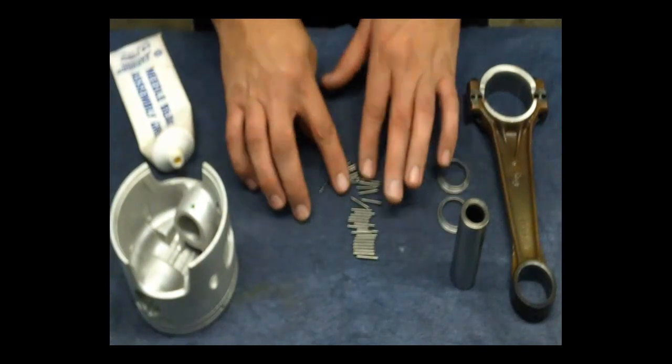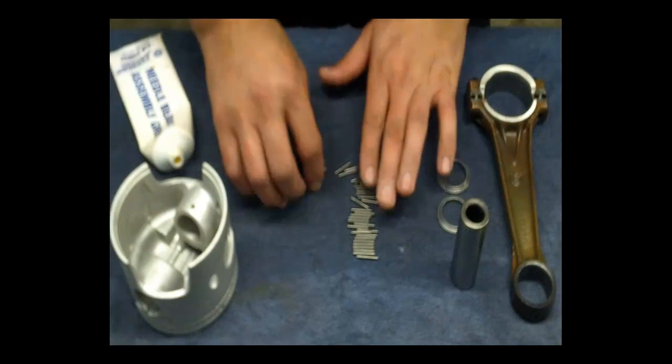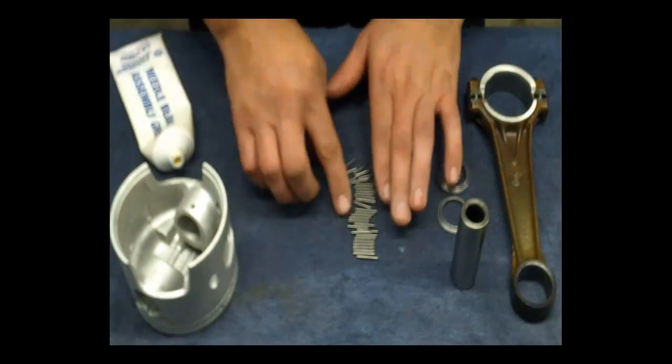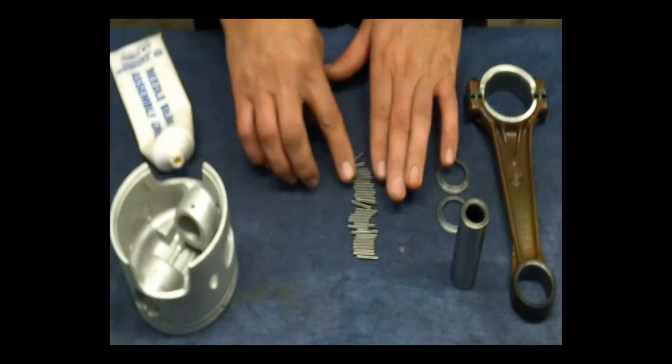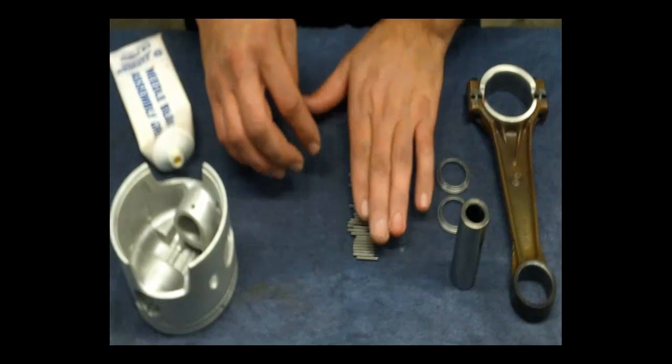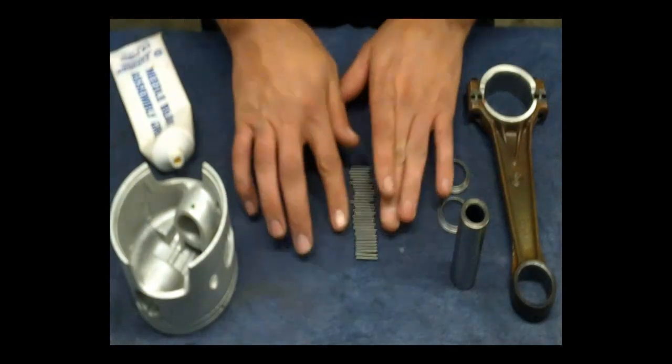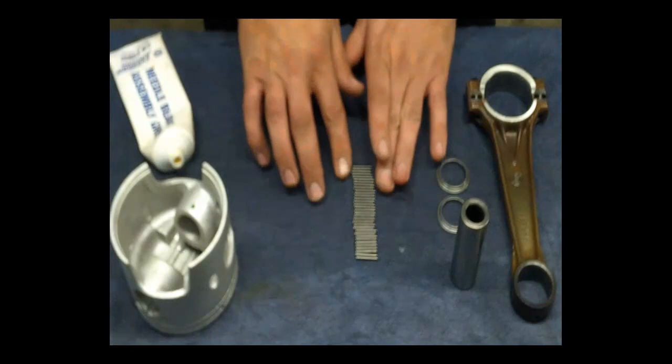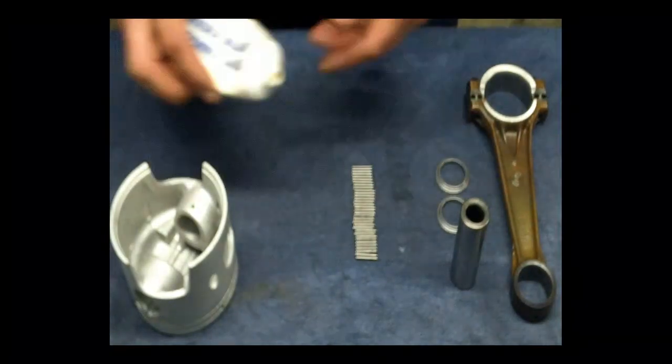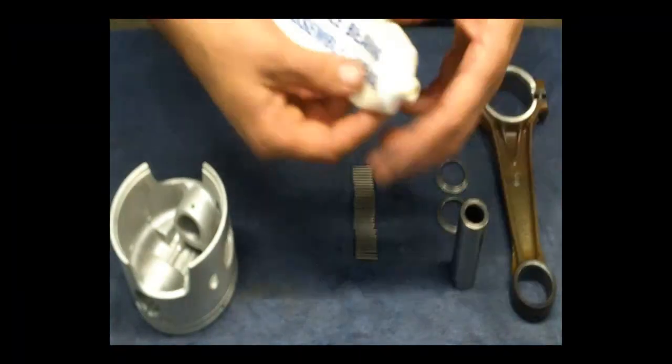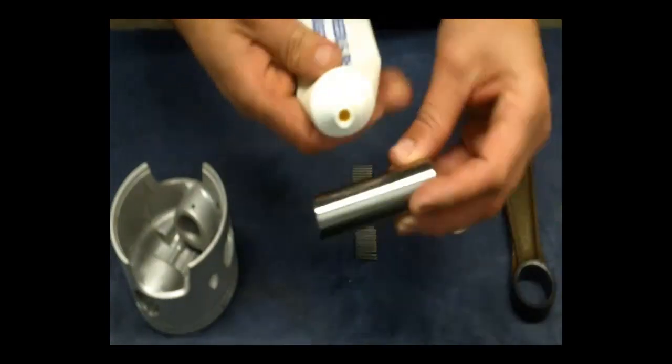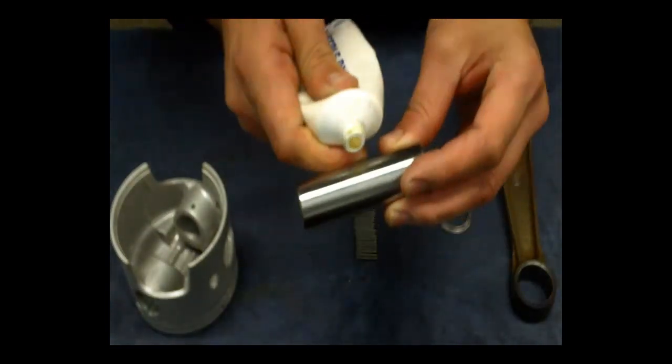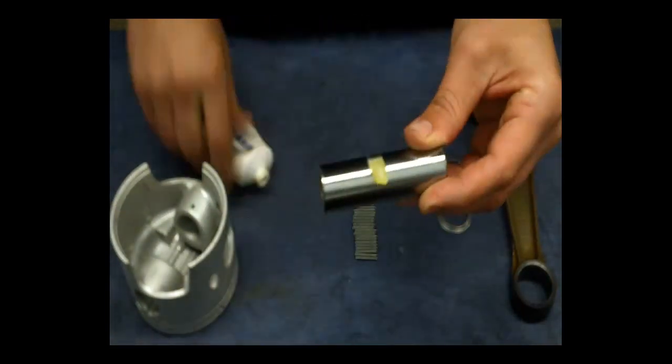So line them up in a straight line. If you are using the old needle rollers and you have inspected them and they are all good, then this is a good time to count all of the needle rollers and make sure that they are all there and that you are not missing any. Okay, so I take the wrist pin and use the needle bearing assembly grease and put a thin coating around it.